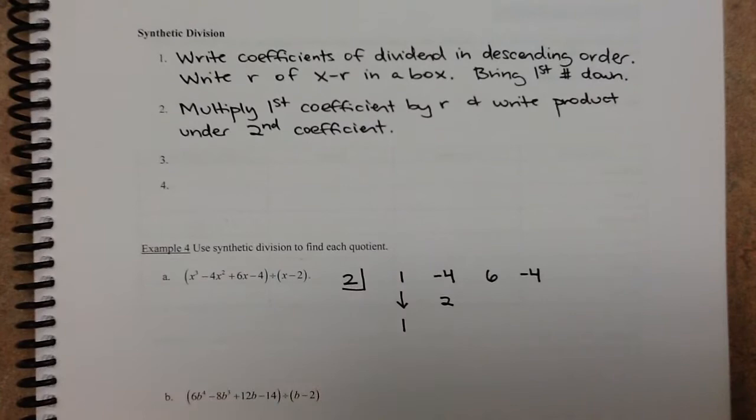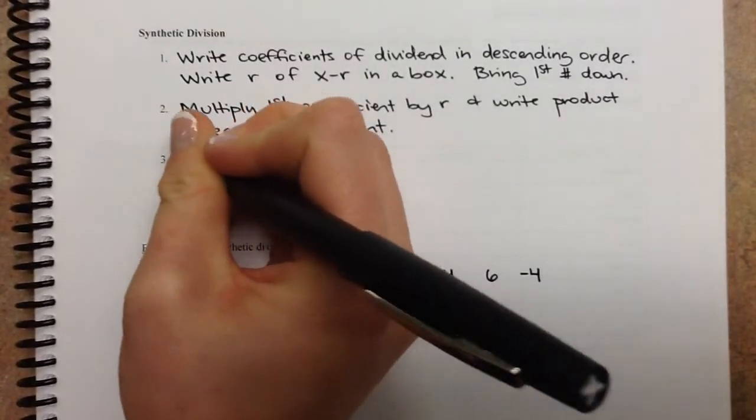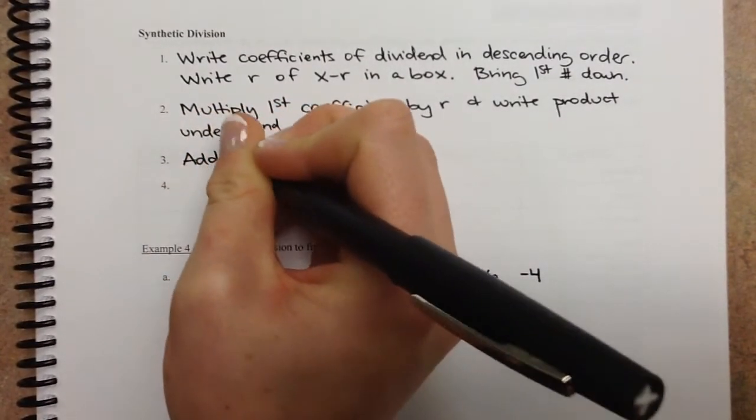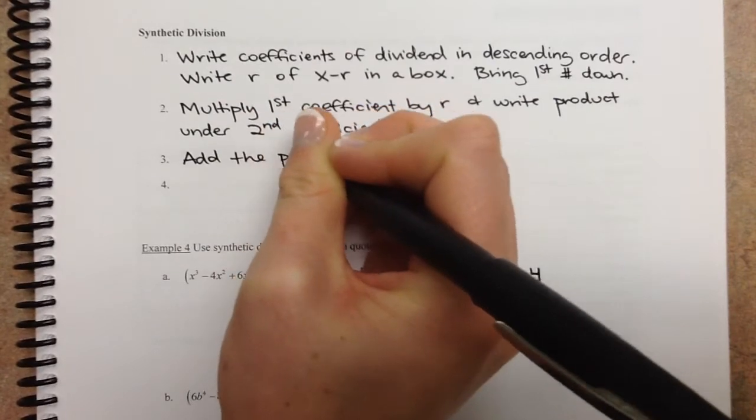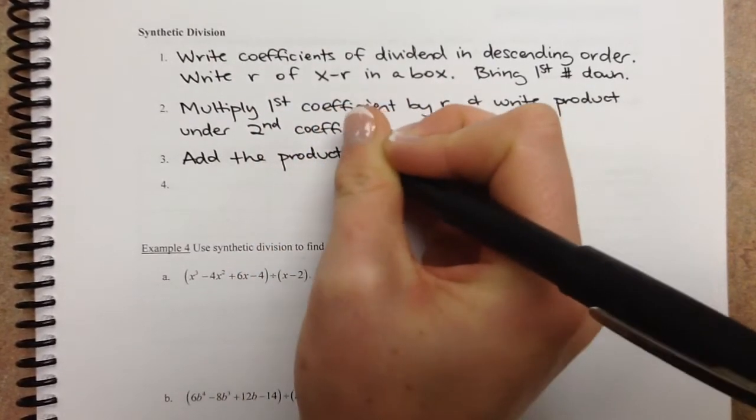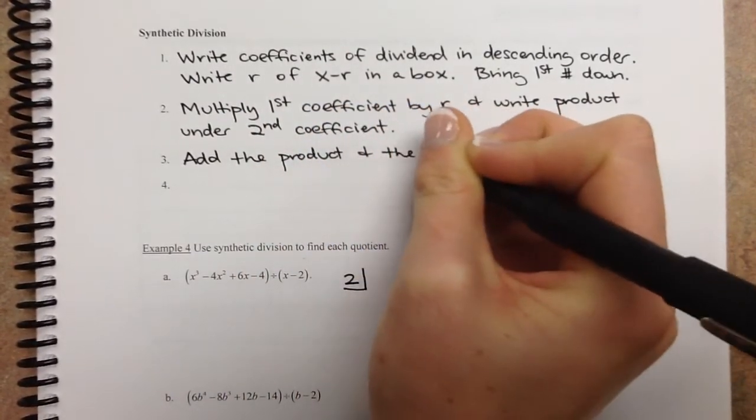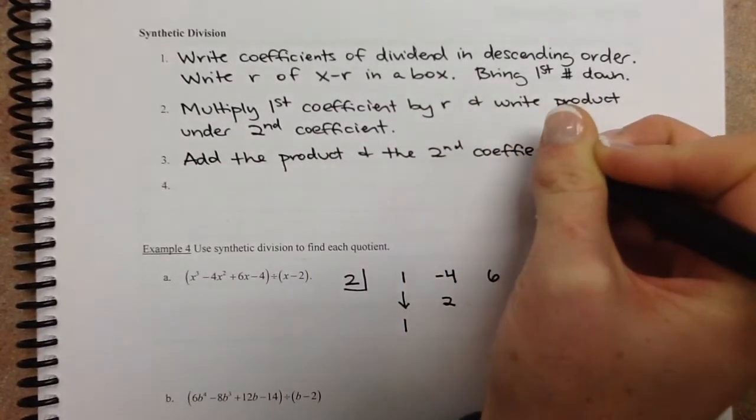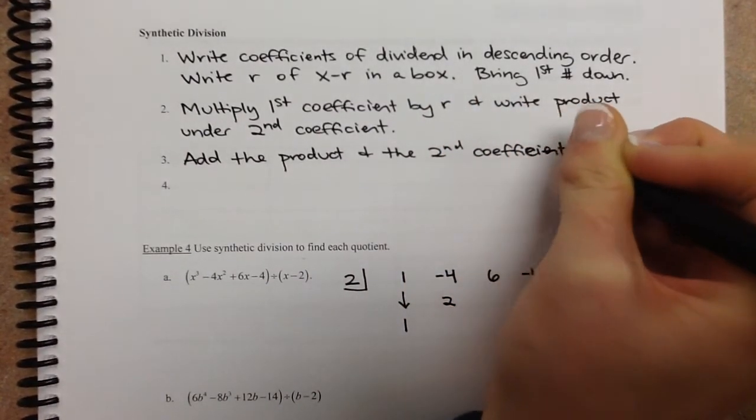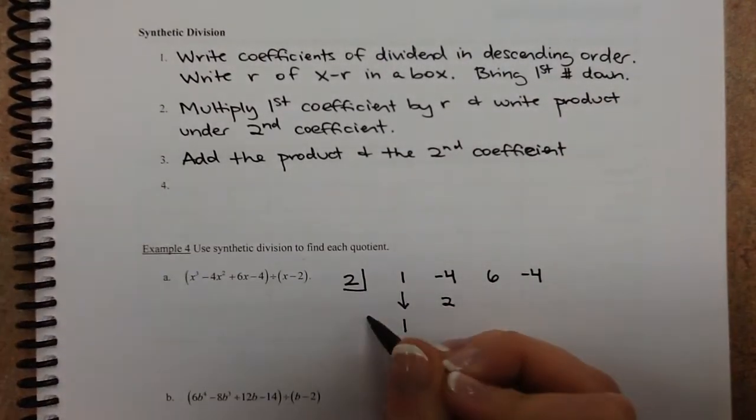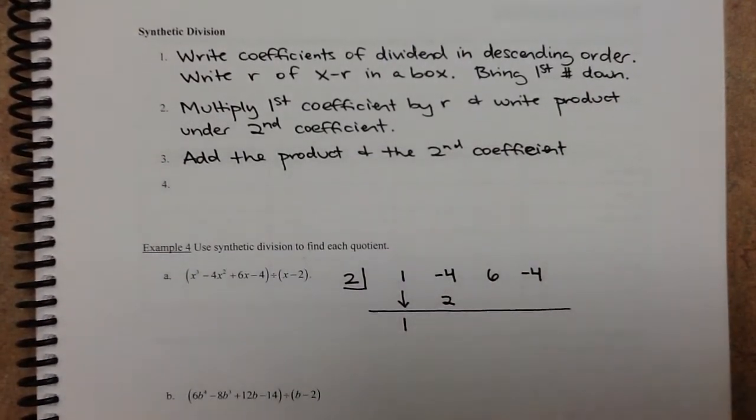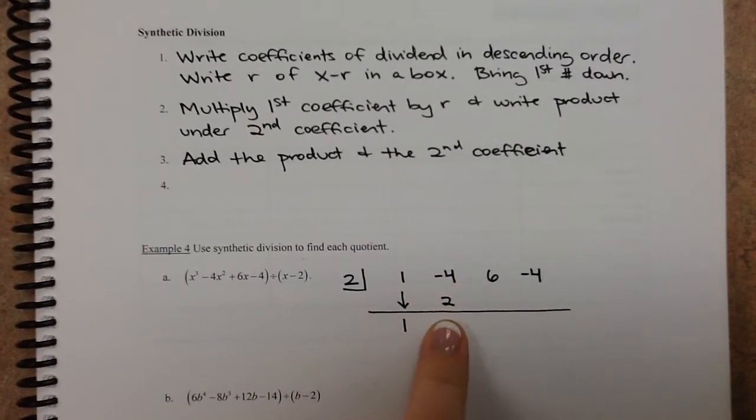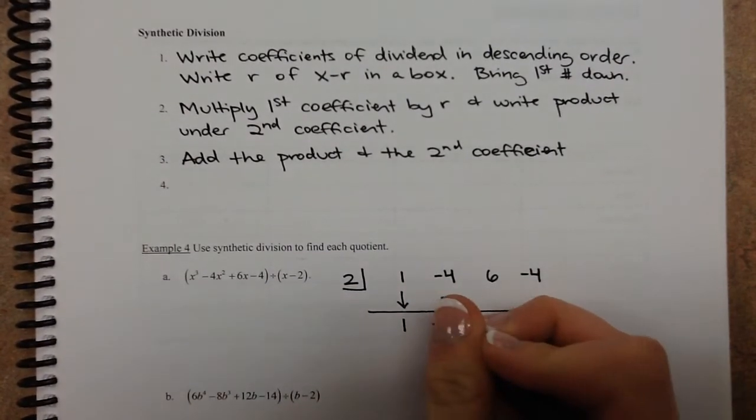Add the product and the second coefficient. So that's step 3. So now this is going to be like a big addition problem here. So now I just combine these up. Negative 4 and positive 2, I get negative 2.